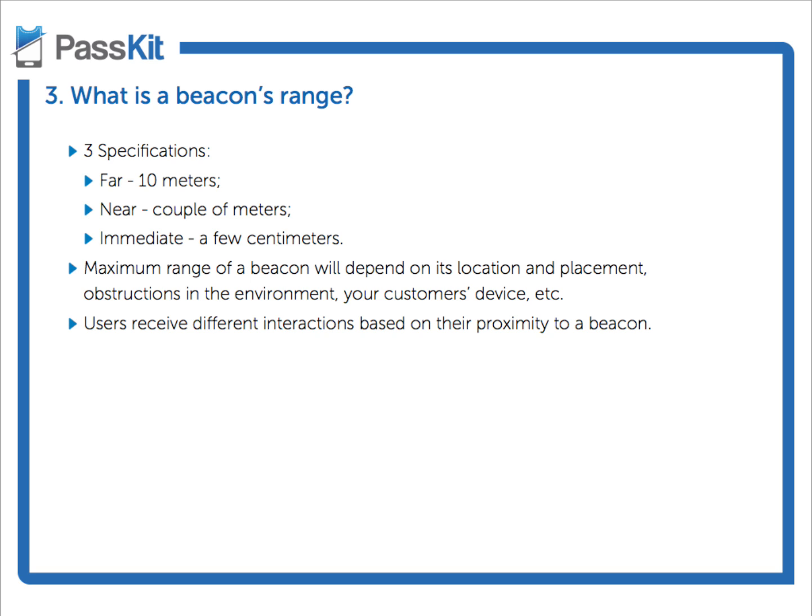These three different specifications allow users to receive different messages based on their location relative to that Beacon. For example, if I'm standing at a far distance from the Beacon, I could receive a certain message. If somebody else is nearer to that one Beacon, they might receive an entirely different message. And somebody standing right next to the Beacon within a few centimeters could receive a completely different message. The fact that you can have one Beacon programmed to send three different kinds of messages based on user location is very powerful.